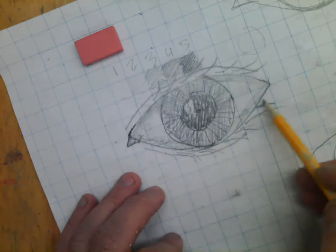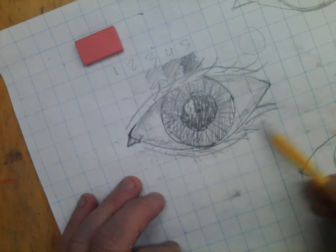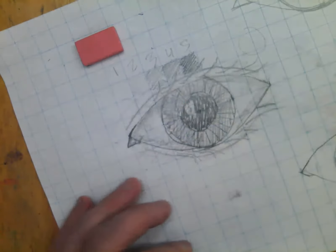A final step, final, final step, is you can shade the outside. That would be like a two-ish. Let's shade the outside of the eye.